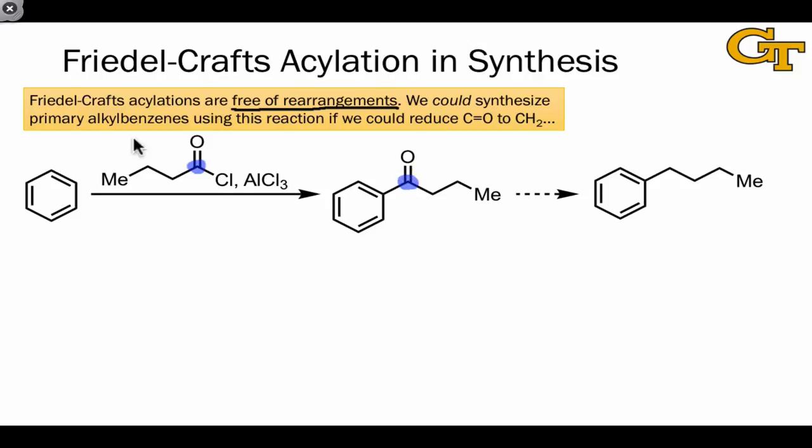If we could somehow reduce the carbonyl group through reaction conditions that replace the two bonds to oxygen with two bonds to hydrogen, we've accomplished in two steps what Friedel-Crafts alkylation was unable to do in one step.